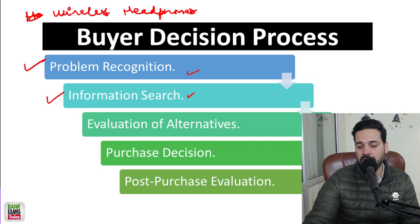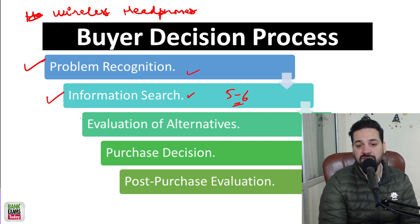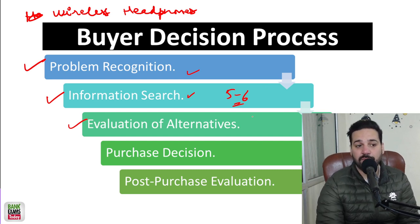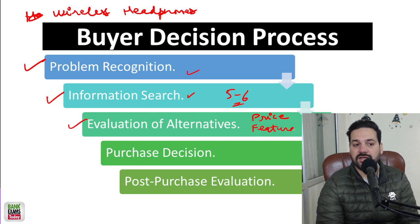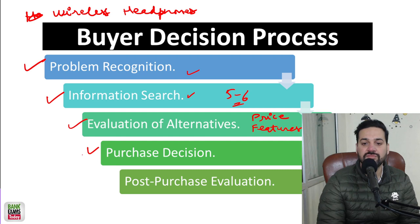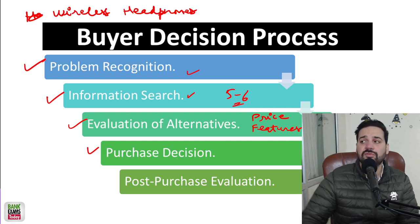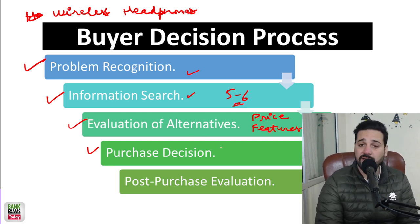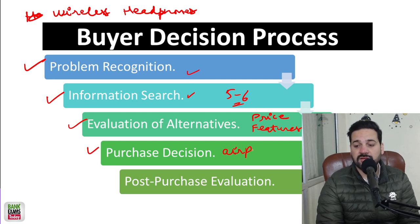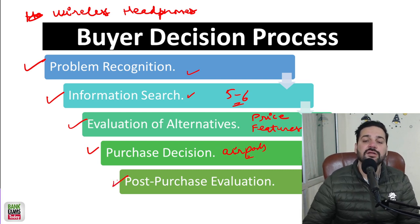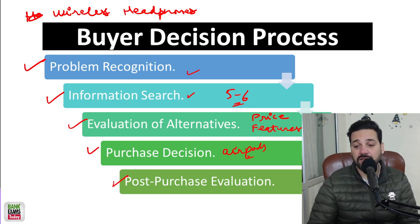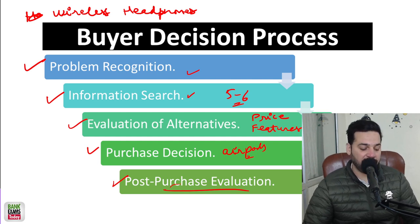After that, you get to know there are five or six options available. Then you did the evaluation — you checked which price they are available at, what features are available, what features you need. Then you made the decision. You searched online and found Samsung, Apple, Realme available, then you made a purchase decision — okay, I need AirPods. Once you have them and use them, after one month you have your feedback: was that a good decision or bad decision? That is the buyer decision process.